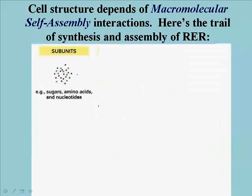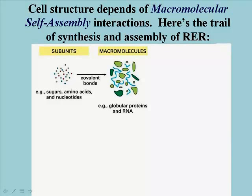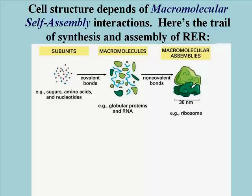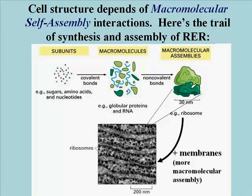Strength in numbers. Let's follow the assembly of rough endoplasmic reticulum in this slide as an example of productive macromolecular interactions. First, monomeric subunits like amino acids and nucleotides are polymerized in dehydration synthesis reactions to form polymers that fold into specific shapes. The resulting polypeptides and RNAs bind specifically to each other, actually in a very precise order, to form ribosomal subunits in an act of macromolecular assembly. The ribosomal subunits meet up with an RNA molecule and start making polypeptides, and some of these attach to internal cellular membranes to form the rough endoplasmic reticulum — yet another act of macromolecular assembly. The point here is that many large cellular structures form specifically in this way.